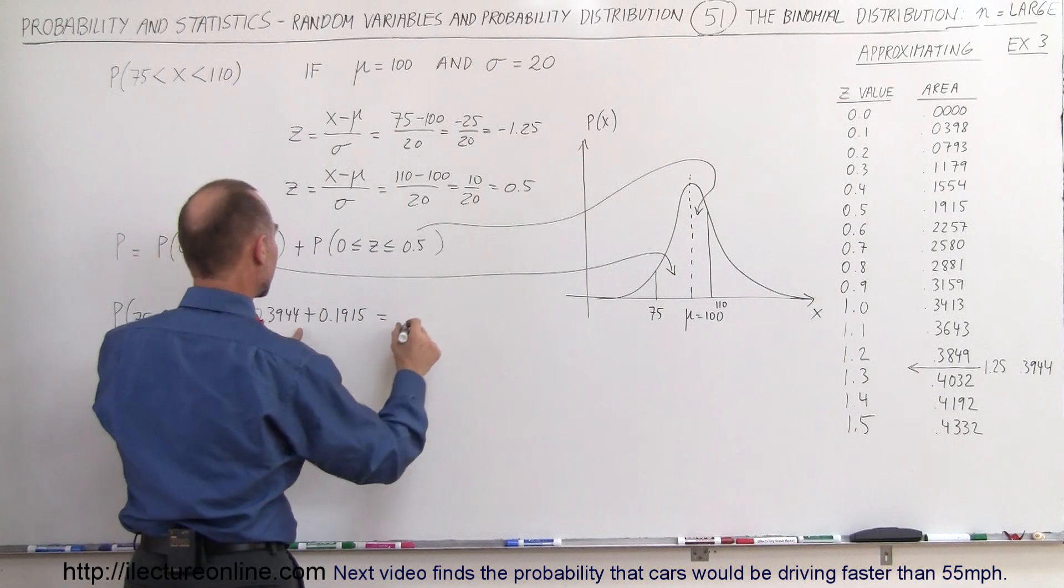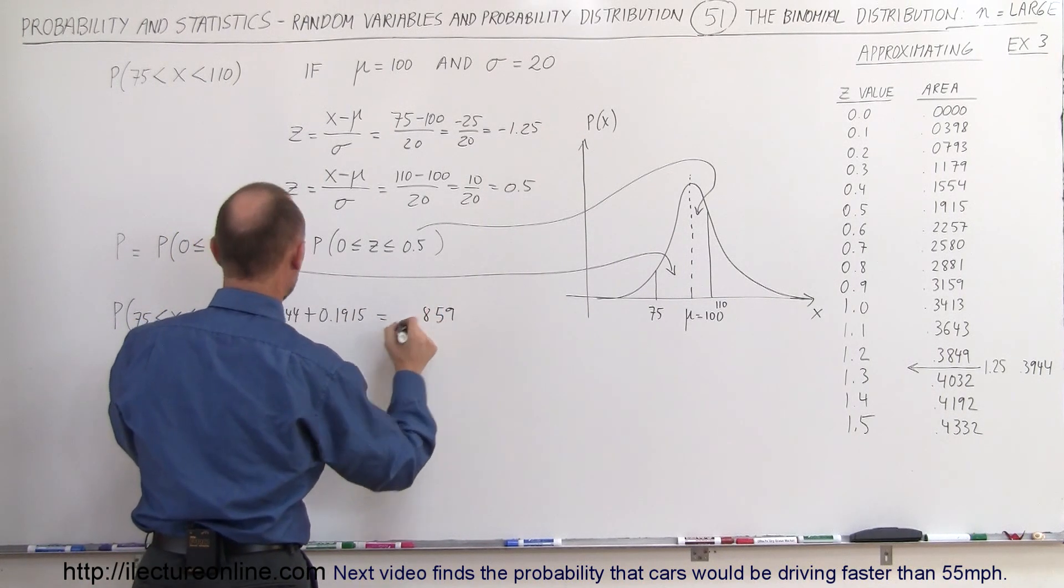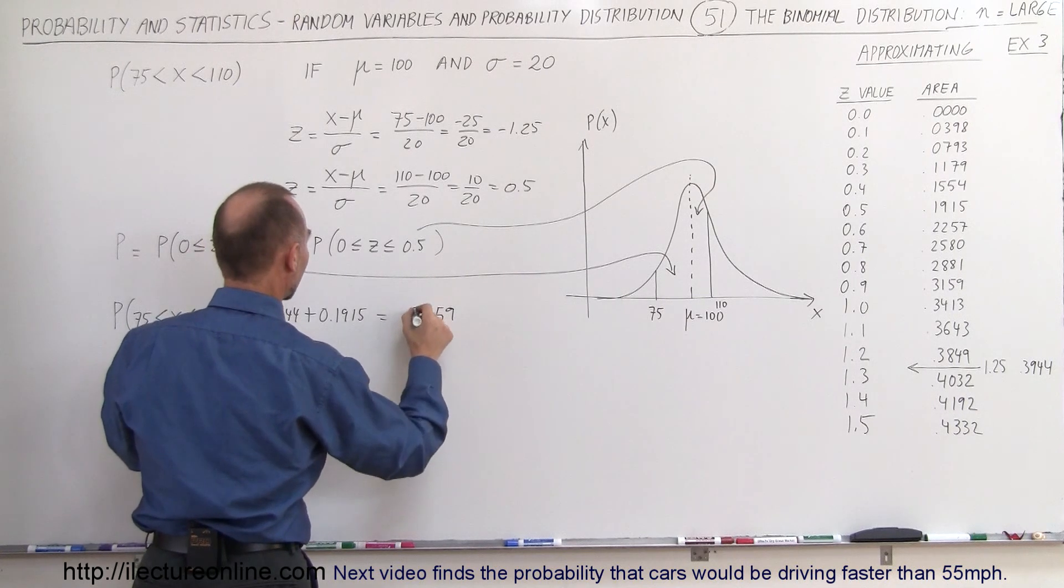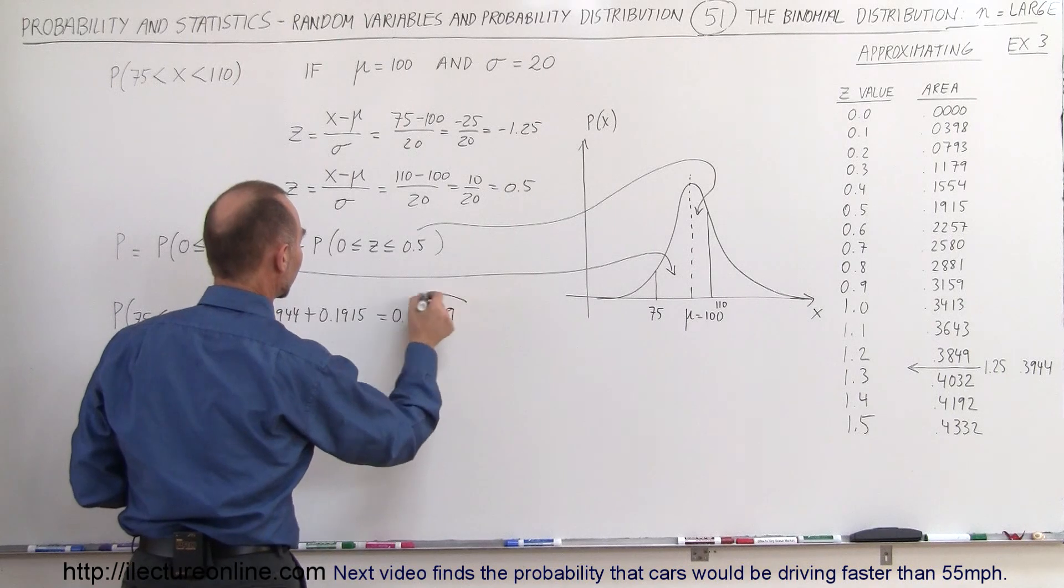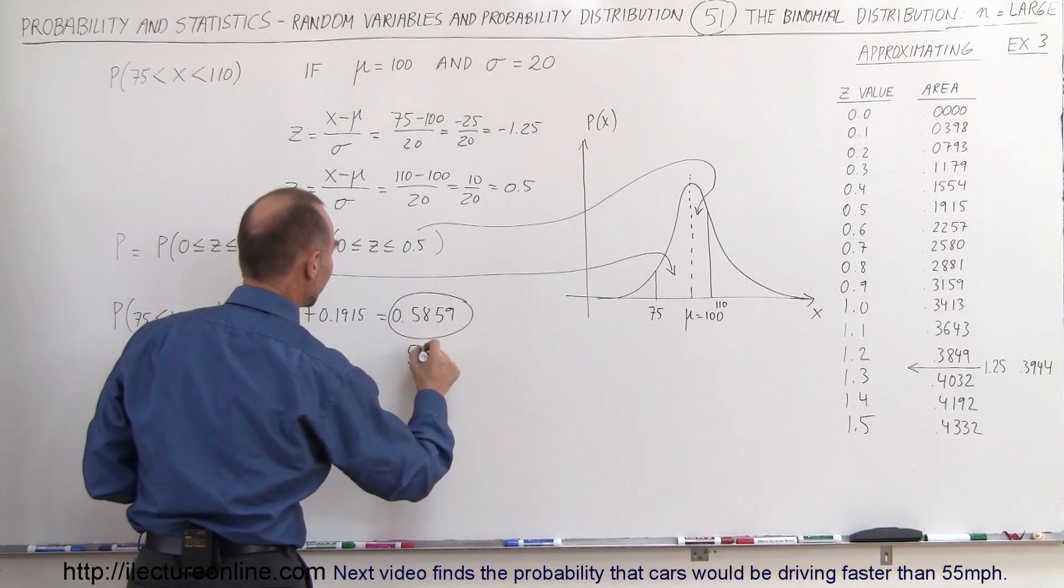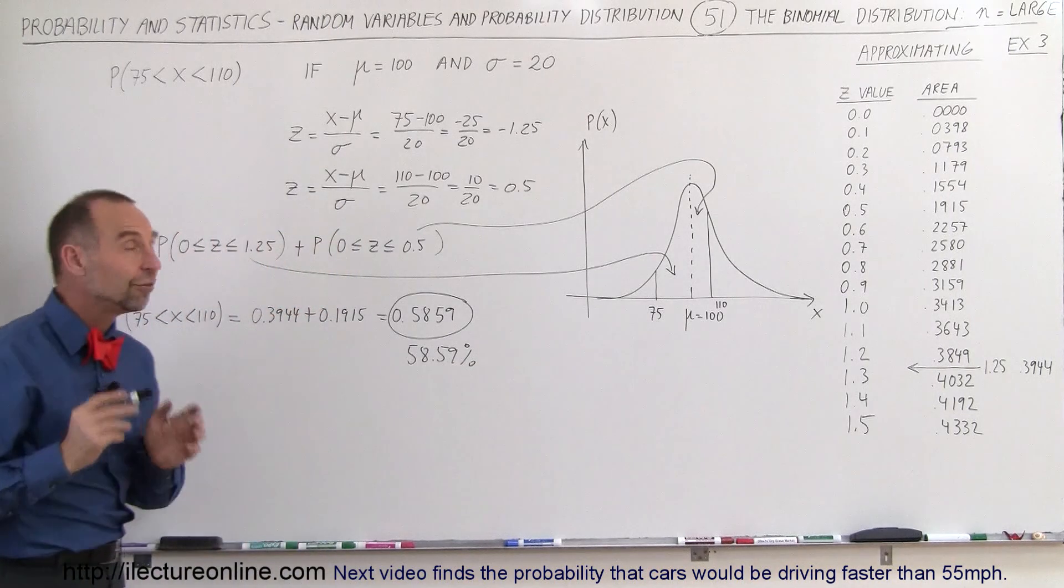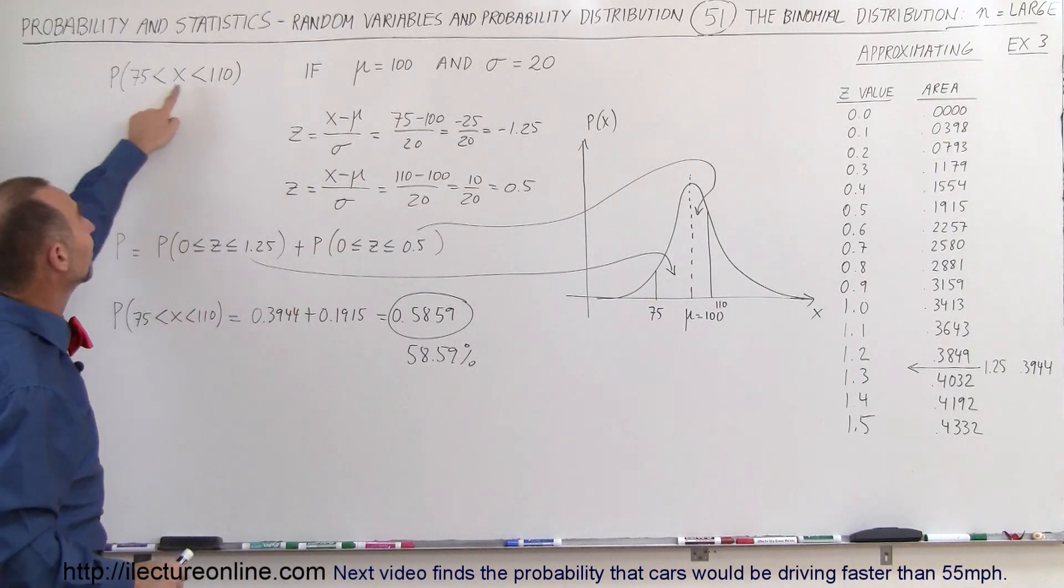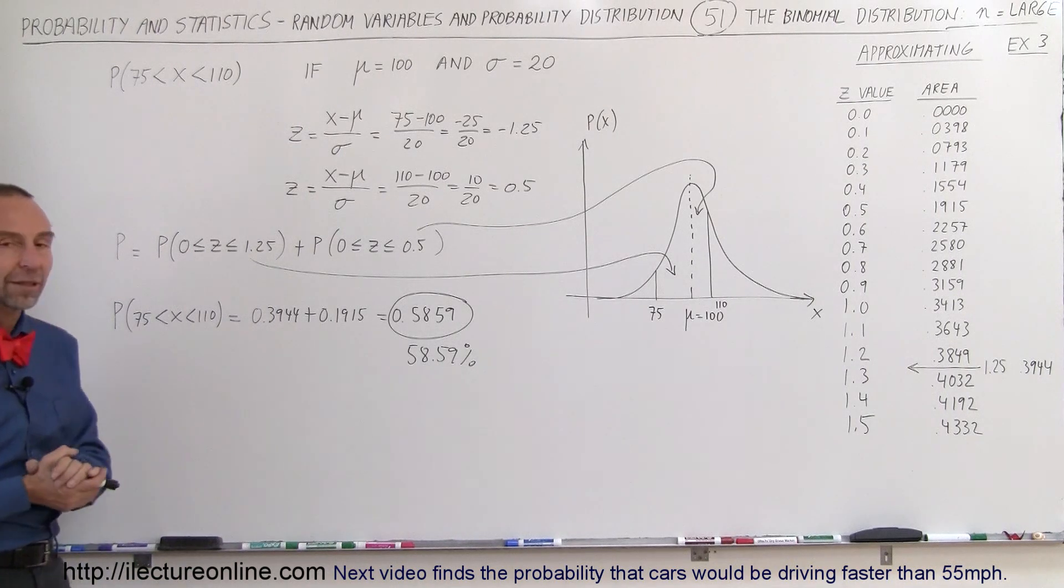And when we add that together, we get 9, 1 plus 4 is 5, 9 plus 9 is 8, 1, that's 3, 4, and that's 5, 0.5859. Let's quickly check, and that's correct. So this would be the probability or 58.59% that the x value will fall somewhere between 75 and 110. And that's how we do that with this nice approximation method.